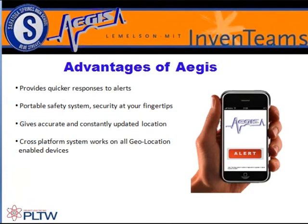Aegis takes the best of the blue light security system and other panic devices, as well as innovative ideas of our own, and puts them in your pocket. The constantly updating GPS location allows you to be mobile instead of having to stay in one spot, while campus security can still see exactly where you are. We hope that if the Aegis security system is implemented, college students will feel much more secure knowing that campus security is only a button push away.